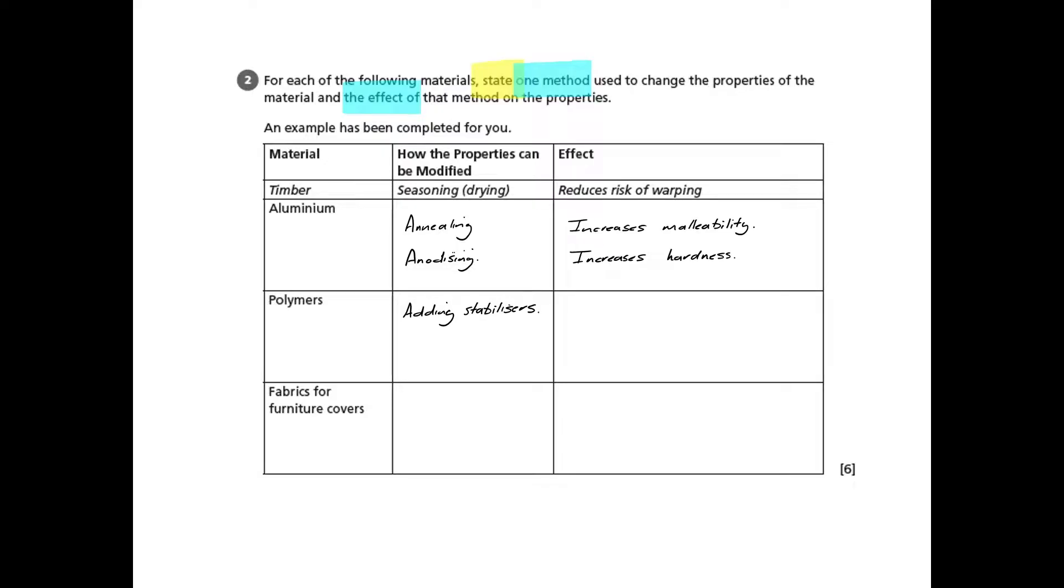And the effect that that has on the properties is that it can prevent UV degrading the polymer. So you might have heard of UPVC windows. The U in that is the stabiliser that stops the windows getting yellow or brittle and degrading.